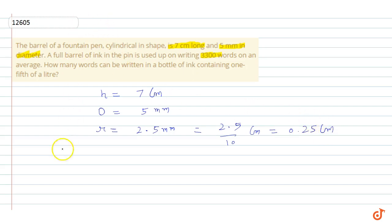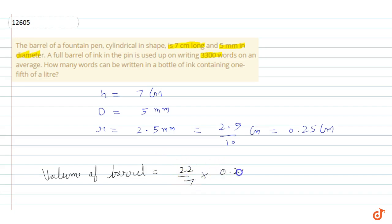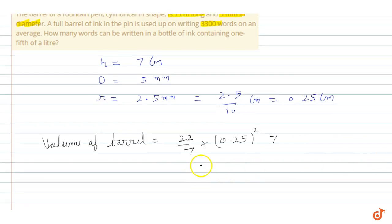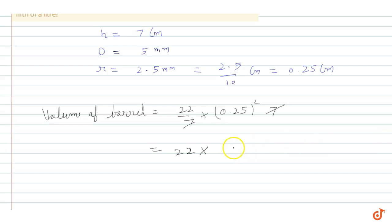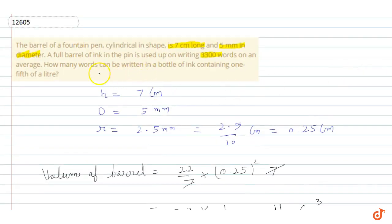Now, the volume of the barrel equals π r² h. So that is 22/7 × (0.25)² × 7. We can cancel 7 with 7, giving us 22 × (0.25)². Writing 0.25 as 1/4, we get (1/4)² = 1/16. So 22/16 simplifies to 11/8. The volume of the barrel is 11/8 cm³.